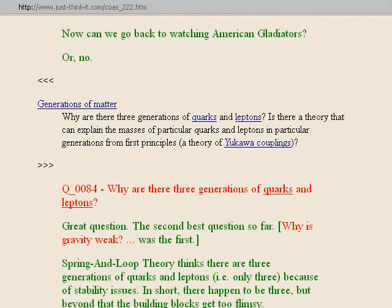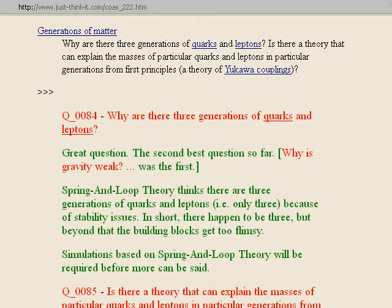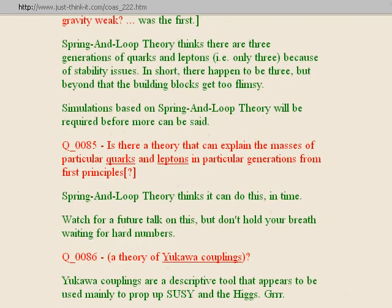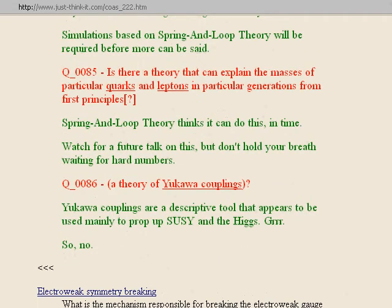Next section: generations of matter. Question eighty-four: why are there three generations of quarks and leptons? Great question — the second best so far; the best was why is gravity weak. Spring-in-Loop Theory thinks there are three generations because of stability issues: there happen to be three, but beyond that the building blocks get too flimsy. Simulations will be required before more can be said. Question eighty-five: is there a theory that can explain the masses of particular quarks and leptons from first principles? Spring-in-Loop Theory thinks it can do this in time. Question eighty-six: a theory of Yukawa couplings? Yukawa couplings appear to be used mainly to prop up supersymmetry and the Higgs, so no. Next section: electroweak symmetry breaking. Question eighty-seven: what is the mechanism responsible for breaking the electroweak gauge symmetry, giving mass to the W and Z bosons? The electroweak symmetry breaking link redirects to the Higgs mechanism page. Spring-in-Loop Theory says if you have a mass question, think loops. Life is too short for the Higgs — consider a root canal instead.